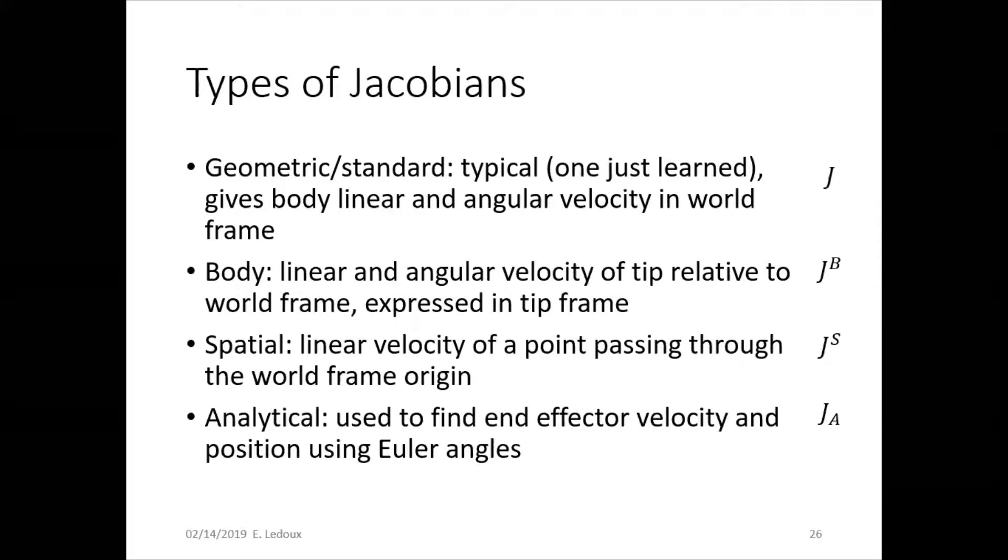There are actually four different types of Jacobians. The geometric or the standard Jacobian is the one that we mainly use in this class. This is the one that we just learned, and it gives body linear and angular velocity in the world frame. The body Jacobian gives the linear and angular velocity of the tip relative to the world, but it's expressed in the tip frame.